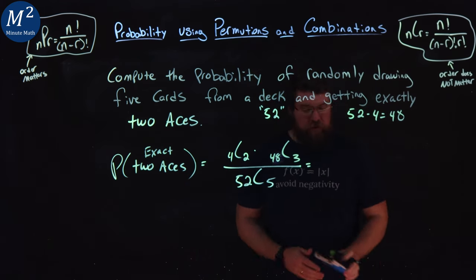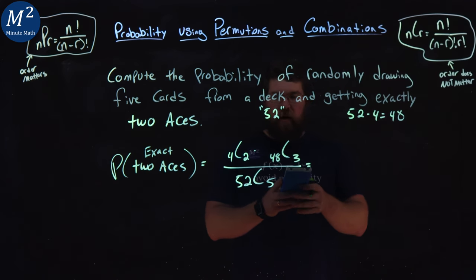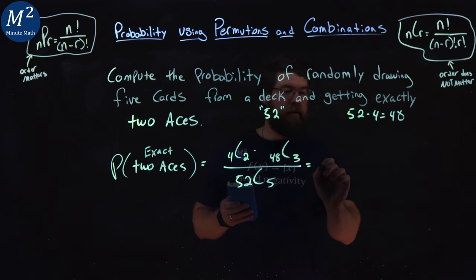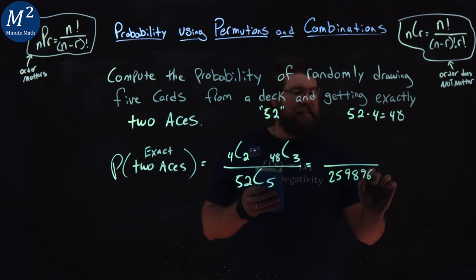So multiply this out. 52 choose five, I did in the previous example, but we can do it again. Let's get the practice here, the reps of typing it correctly in our calculator, or we can use a formula. And 52 choose five is 2,598,960.